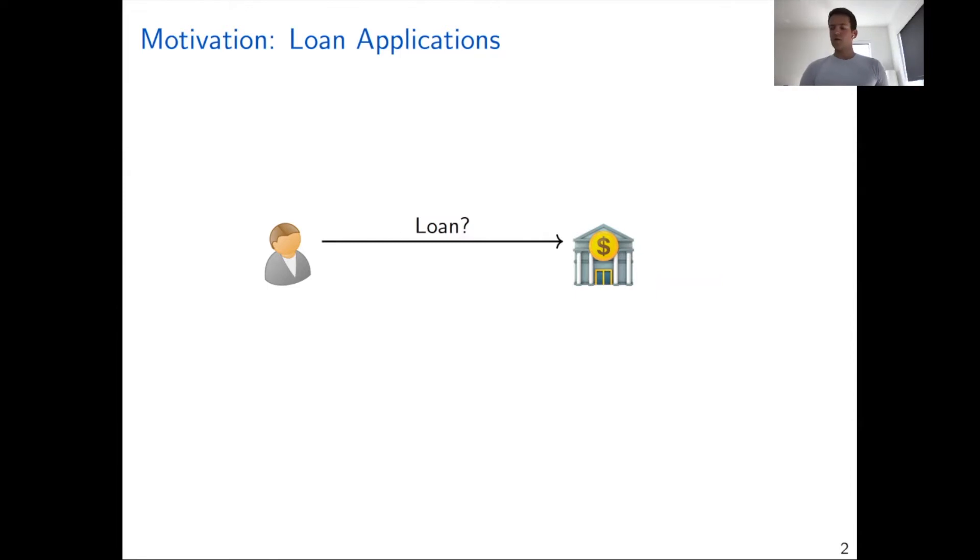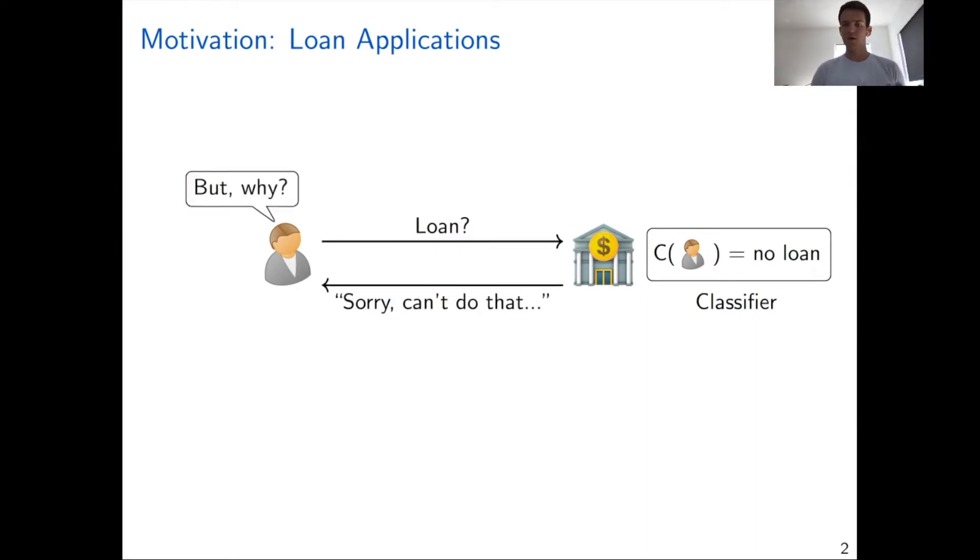Here's a motivating example. Let's consider a customer who goes to a bank and asks for a loan. In the background, the bank will run a classifier, which in this case rejects the loan, and so the bank replies, sorry we can't do that. Obviously the customer would like to have an explanation as to how the decision was made. In this project, we aim to not only provide an outcome that the loan was rejected, but also an explanation as to why this decision was made.